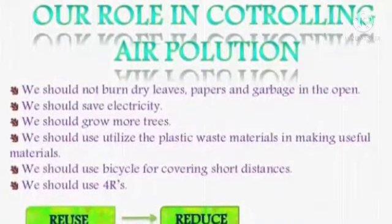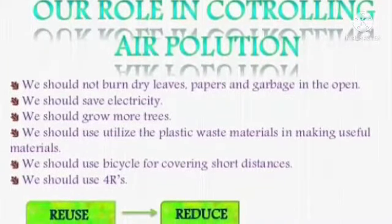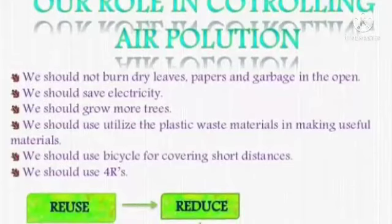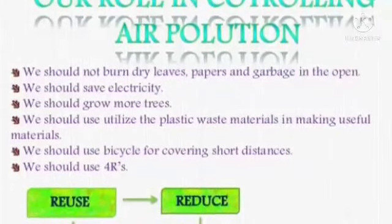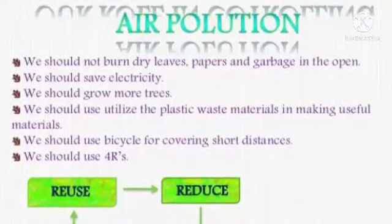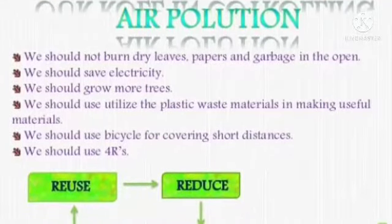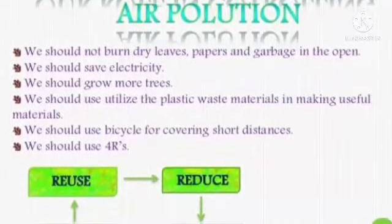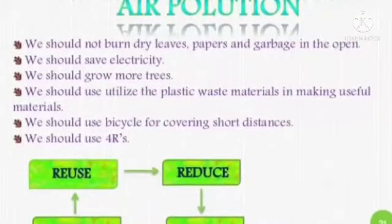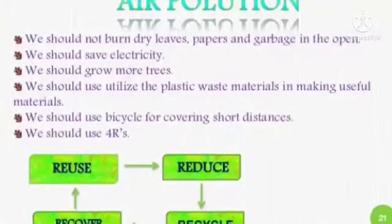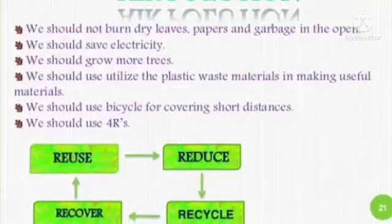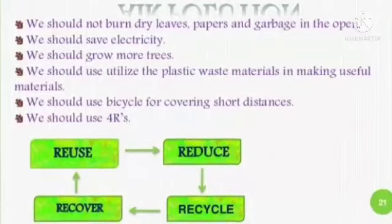Our role in controlling air pollution: we should not burn dry leaves, papers, and garbage in the open. We should save electricity, grow more trees, utilize plastic waste in making useful materials, use bicycles for short distances, and follow the four Rs: reuse, reduce, recycle, and recover.